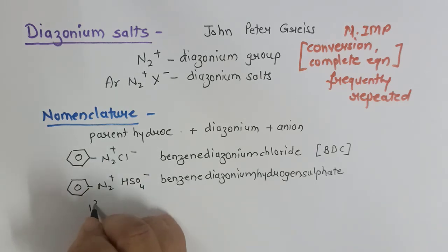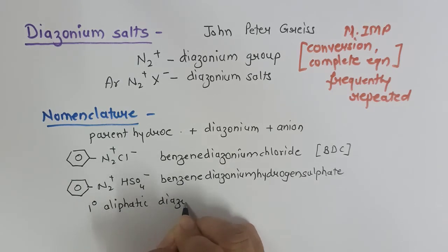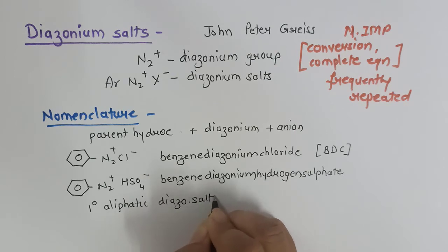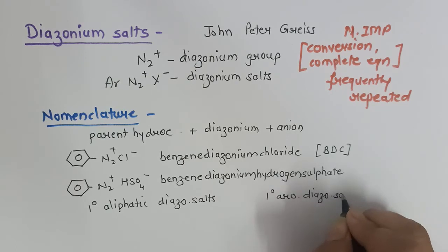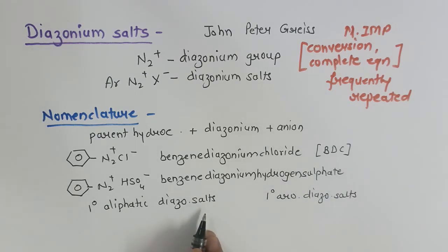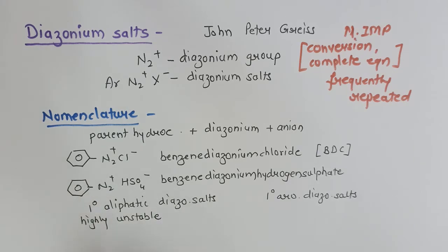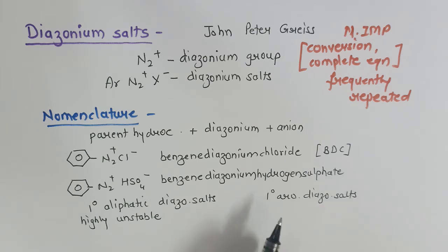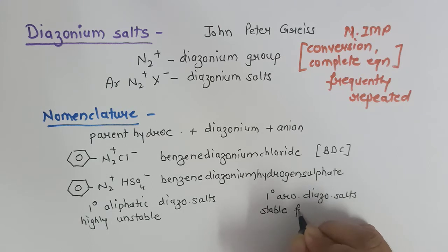There are two types of diazonium salts: first-degree aliphatic diazonium salts and first-degree aromatic diazonium salts. First-degree aliphatic amine diazonium salts are highly unstable. On the other hand, first-degree aromatic amine diazonium salts are stable, but only for a short period of time.